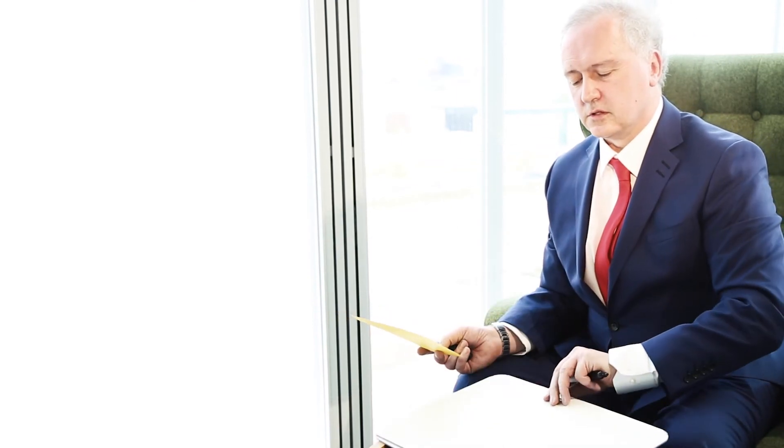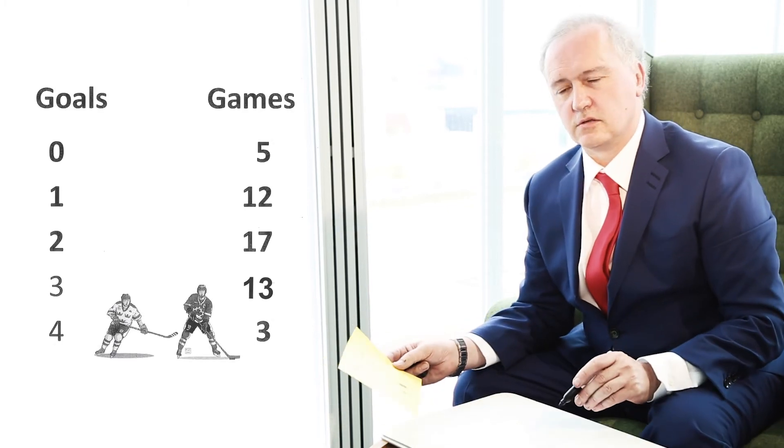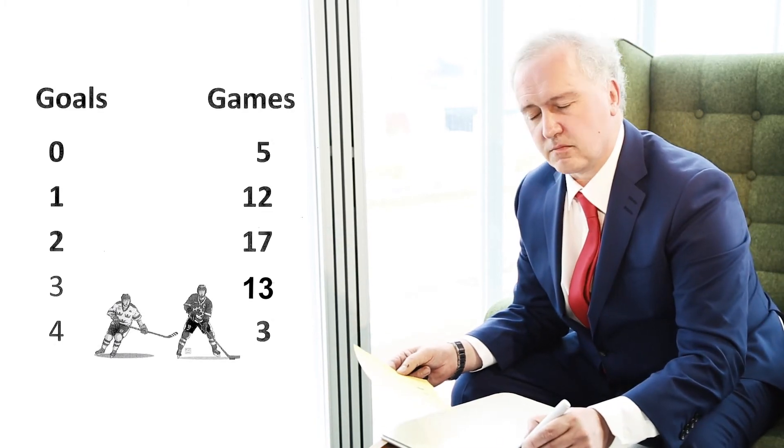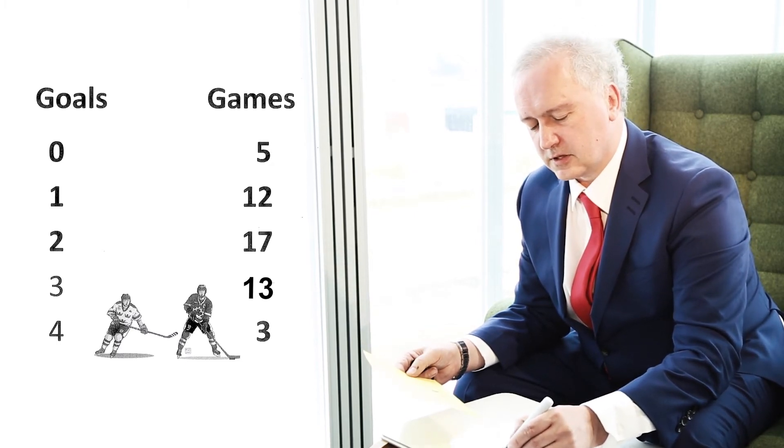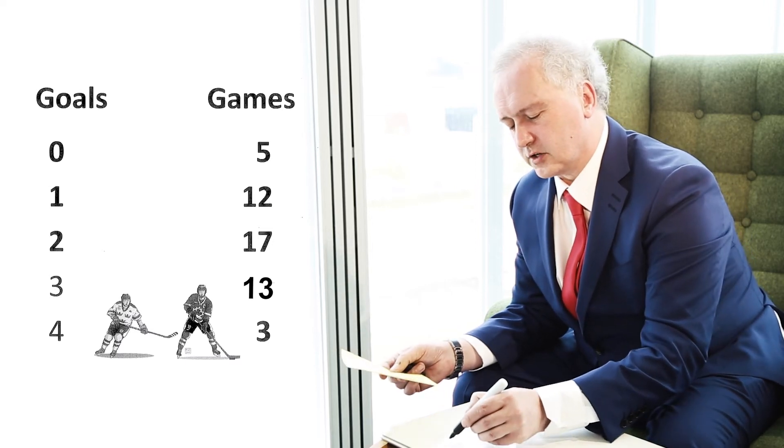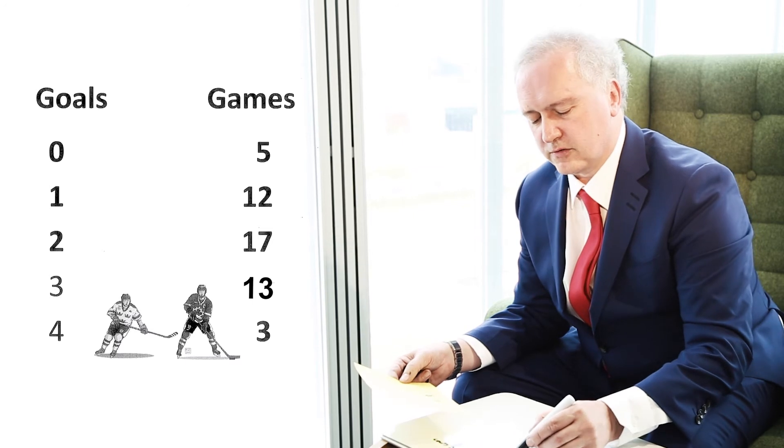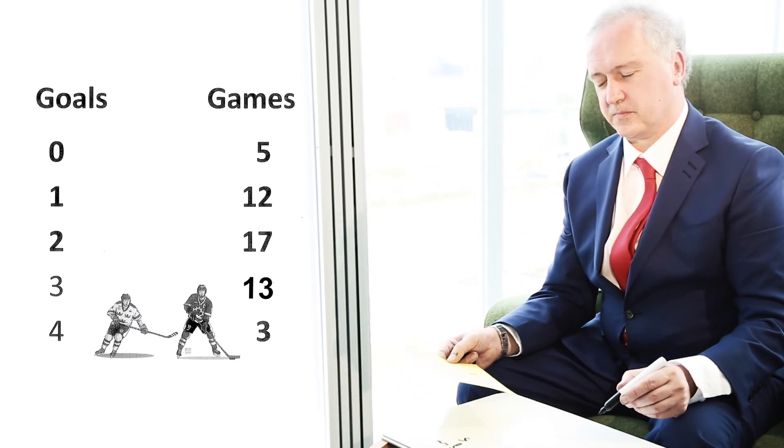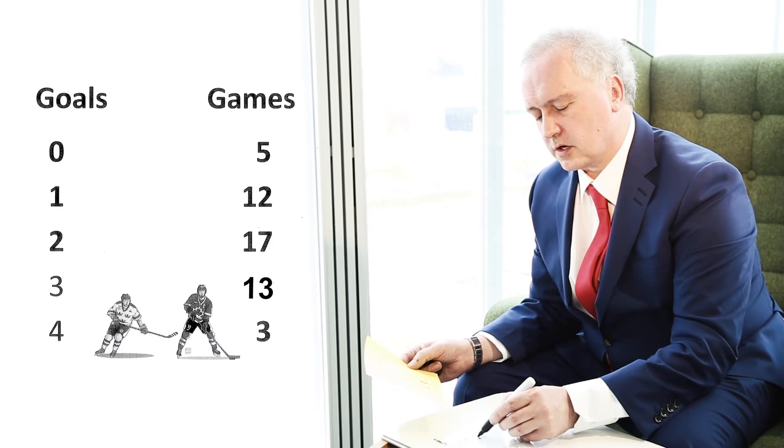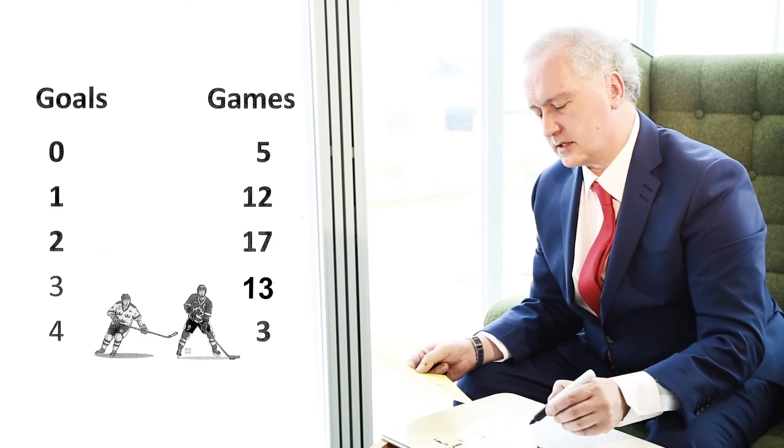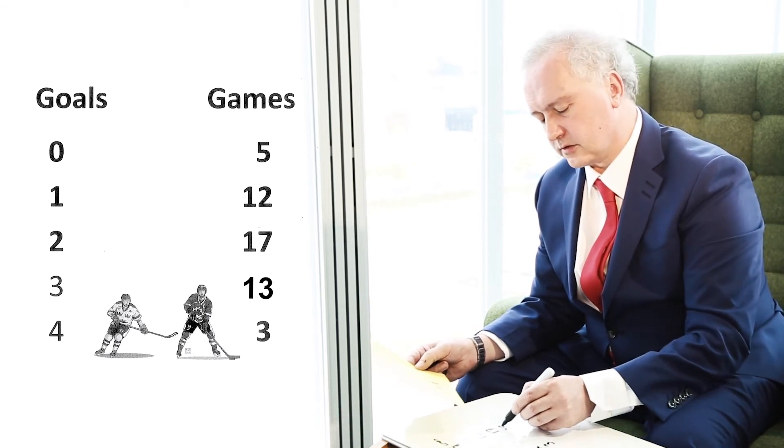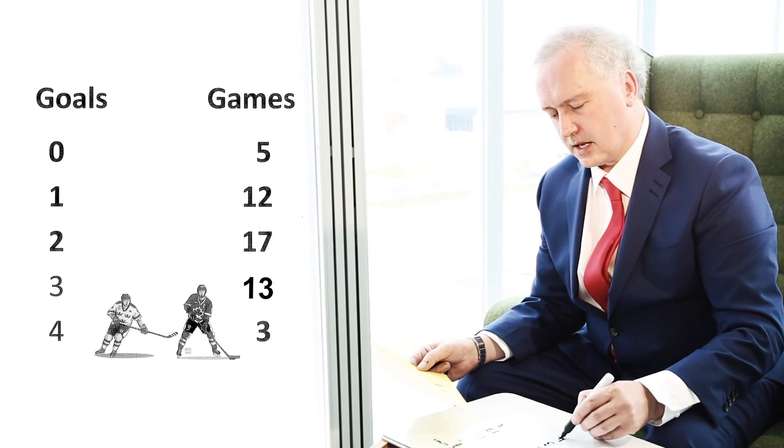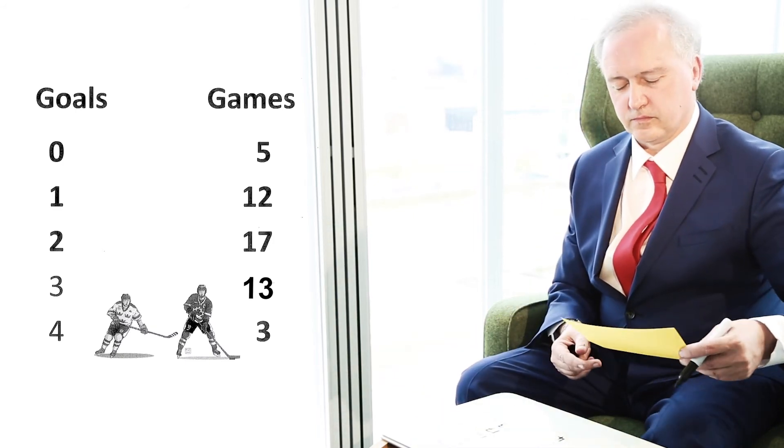Now sometimes we have data that's put forward in frequency data. To illustrate this example, I'd like you to imagine, say, a hockey team looking at the number of goals they've scored in various games in the season. The data I'm looking at now says that for this particular hockey team, we've got 5 games where they scored no goals, 12 games where they scored 1 goal, they scored 2 goals on 17 occasions, they scored 3 goals on 13 occasions, and on 3 occasions they scored 4 goals.